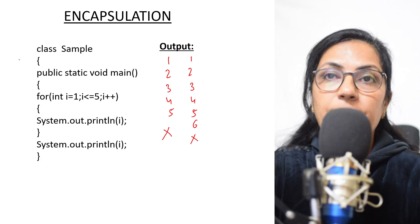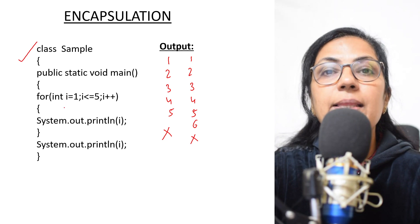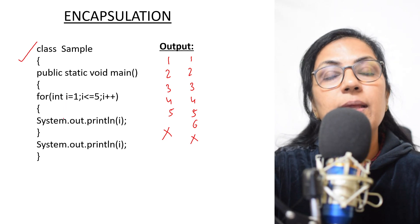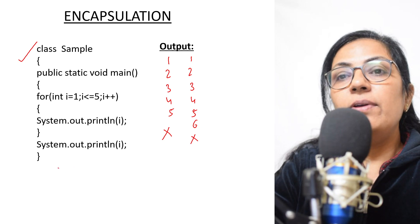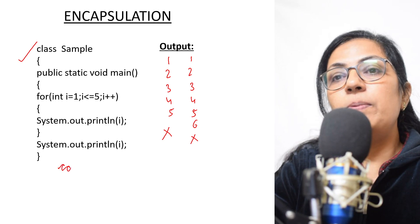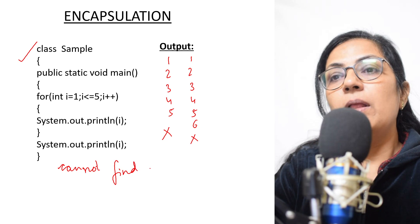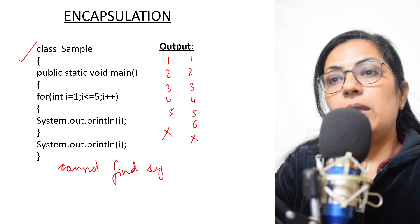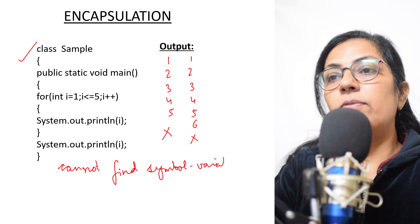Neither answer is correct. When we write this particular program and try to compile it, it will give us an error. The error displayed will be: 'cannot find symbol — variable i'. It will give you this error.